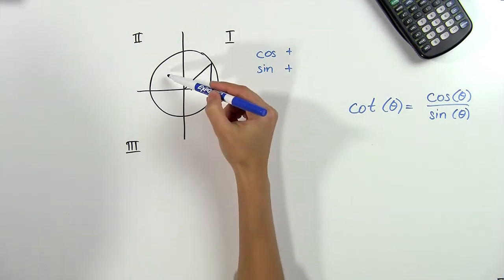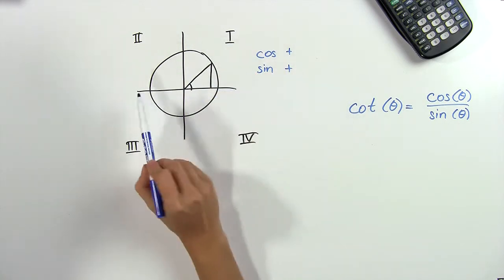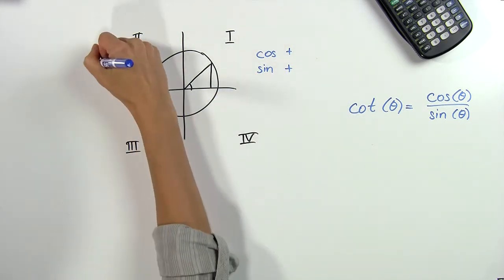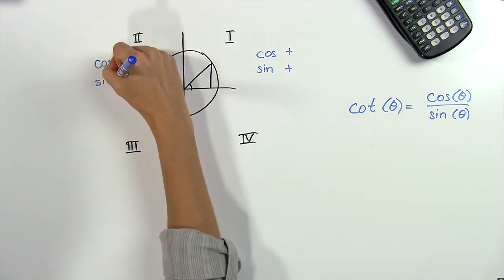If our angle is in the second quadrant, then we know that our y-coordinate will still be positive, but the x-coordinate will now be negative. So that will give us cosine negative and sine positive.